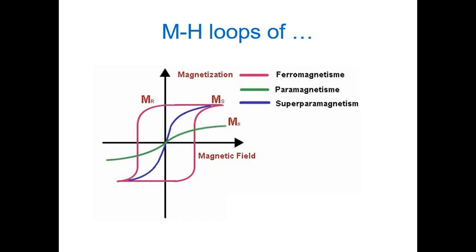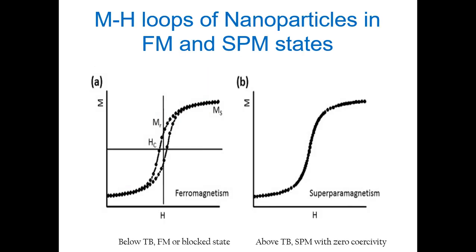The MH loops of different systems are presented: the paramagnetic MH loop is linear, the ferromagnetic MH loop shows hysteresis, and the superparamagnetic MH loop is S-shaped — not linear like paramagnetism, but with zero coercivity, since we still have ferromagnetic alignment in the core. In the superparamagnetic state you get an S-shaped MH loop with zero coercivity, while in the blocked state you get a ferromagnetic-like MH loop. Measured MH loops confirm that above Tb the response is superparamagnetic and below Tb it is ferromagnetic-like.